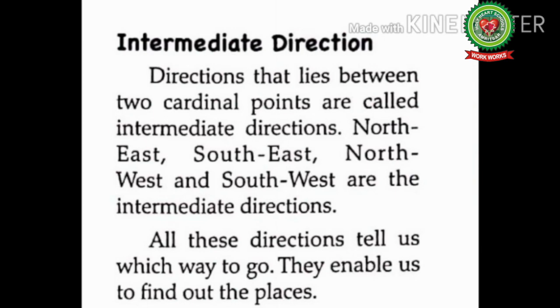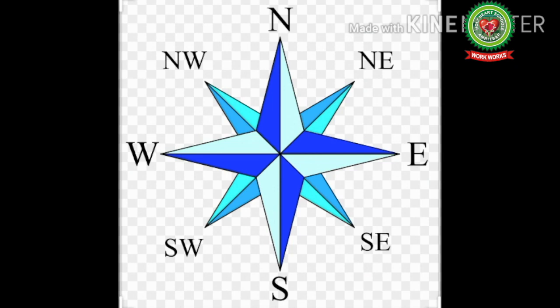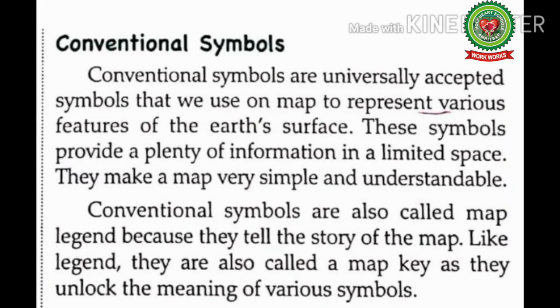For example, northeast, southeast, northwest, and southwest are the intermediate directions. All these directions tell us which way to go; they enable us to find out places — here enable means to make able. In simple words, these directions are very helpful in locating any place more accurately. Now next we will discuss the last component of maps, which is conventional symbols.